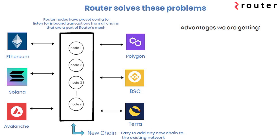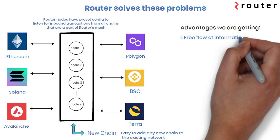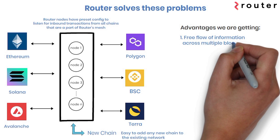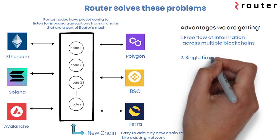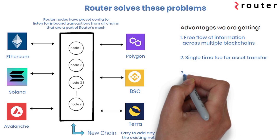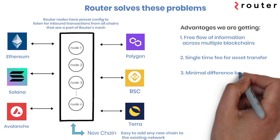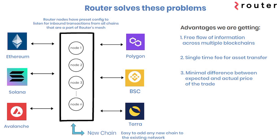Advantages of Router: free flow of information across multiple blockchains, a single-time fee for asset transfer, and minimal difference between the expected and actual price of the trade.